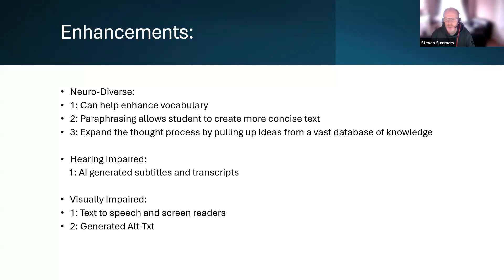For the hearing impaired, AI generates subtitles and transcripts, providing a more inclusive learning environment. It allows students with a hearing impairment to engage in live Teams or Zoom lectures. For the visually impaired, AI text-to-speech means a visually impaired student can be fully immersed in the academic environment.